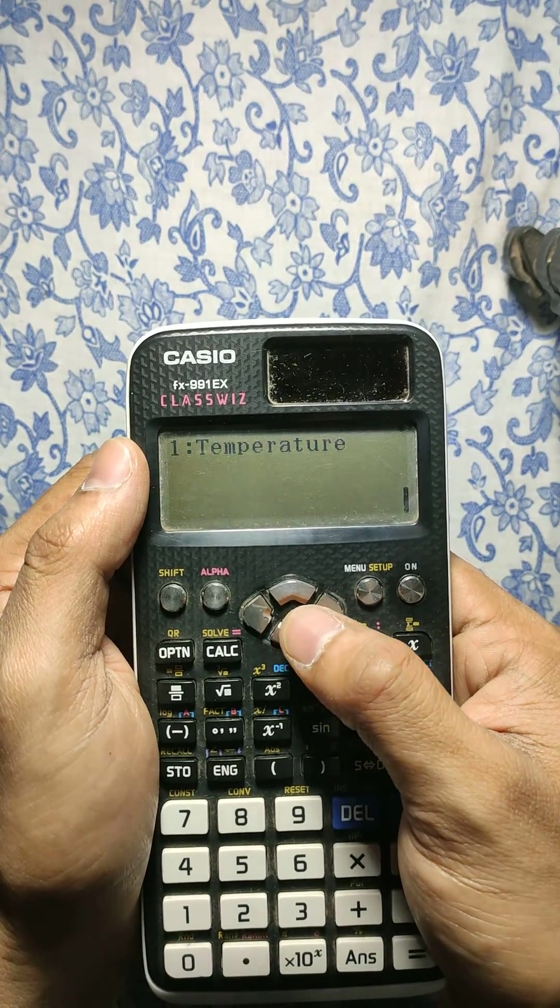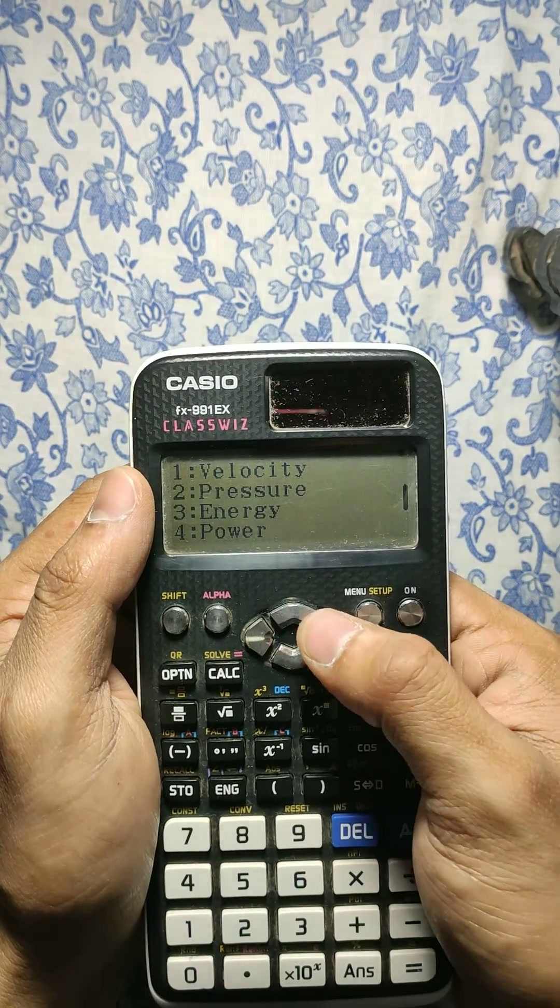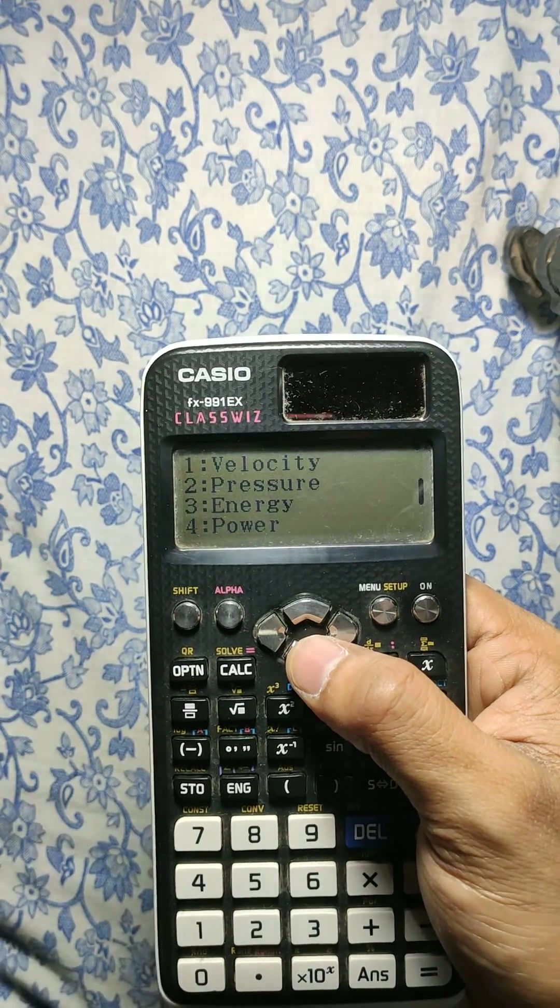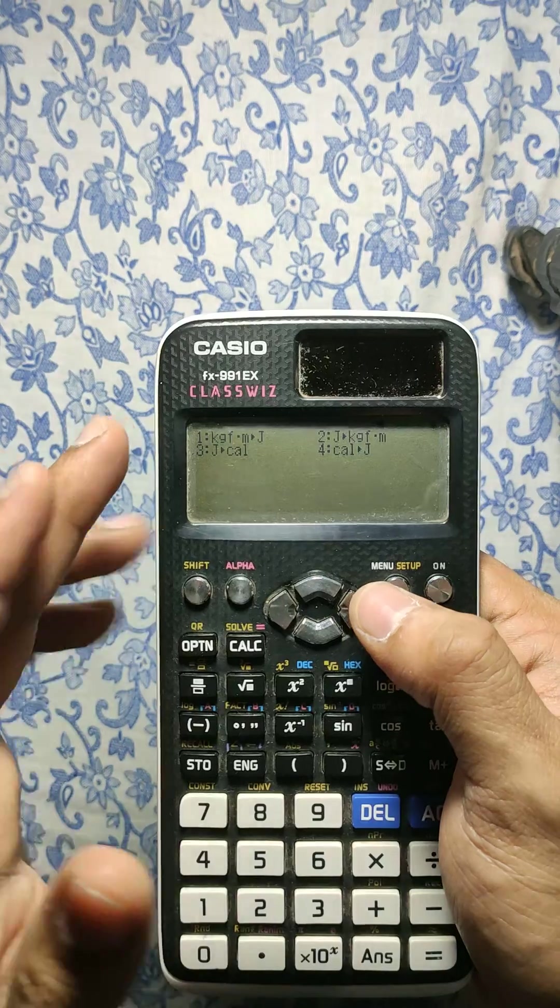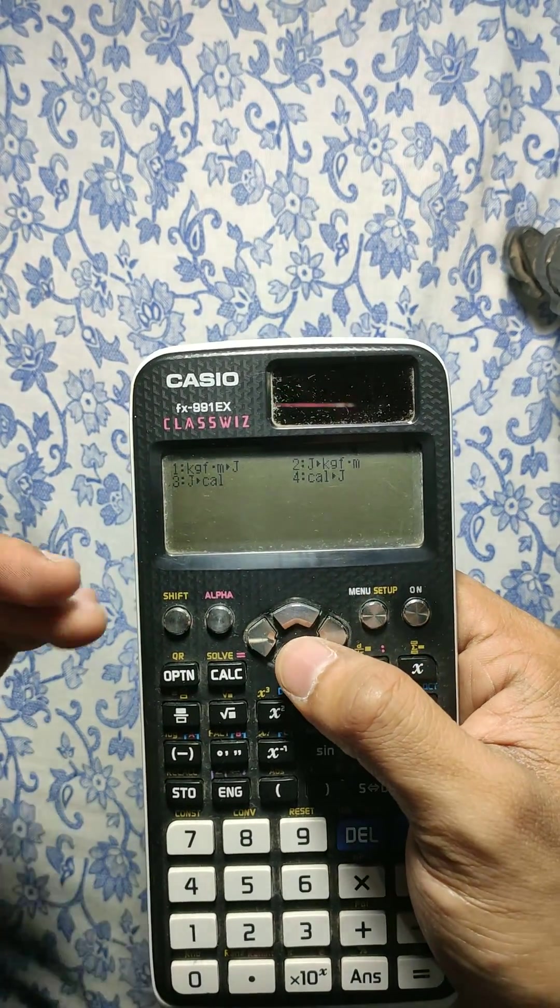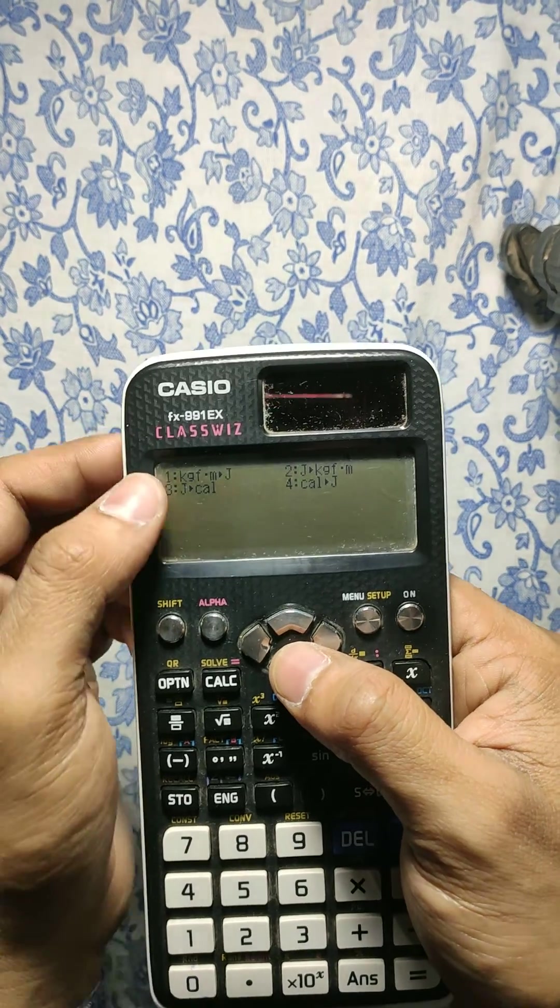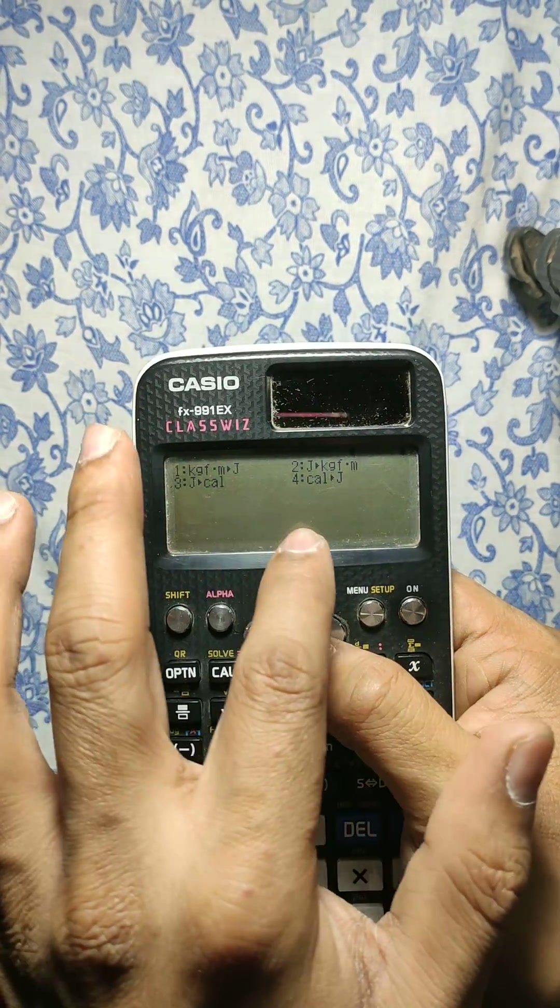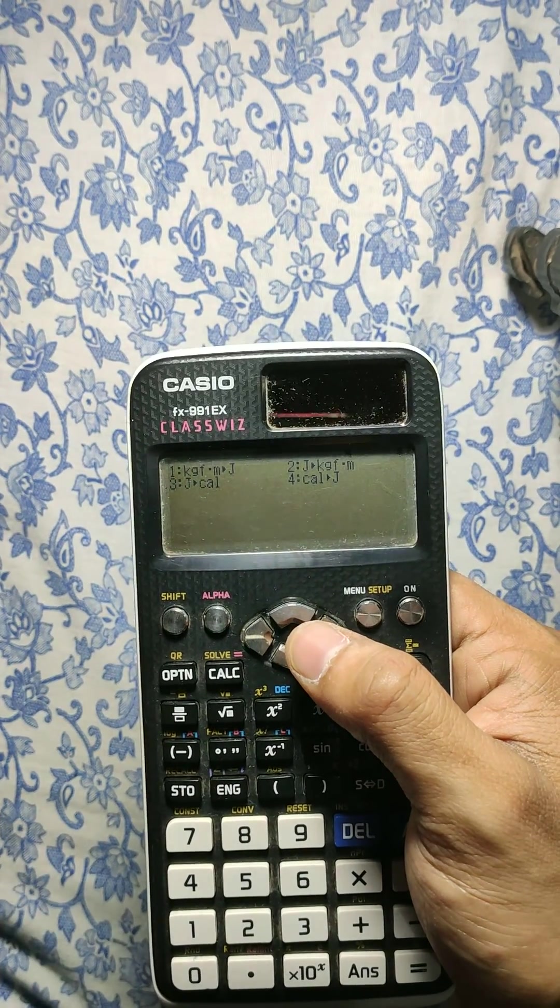So let's try to convert the energy. Okay, so we press 3 and there are the list of units. So here is the kilogram force meter to joule, calorie to joule, etc. Say we want to convert joule into calorie, so we press 3.